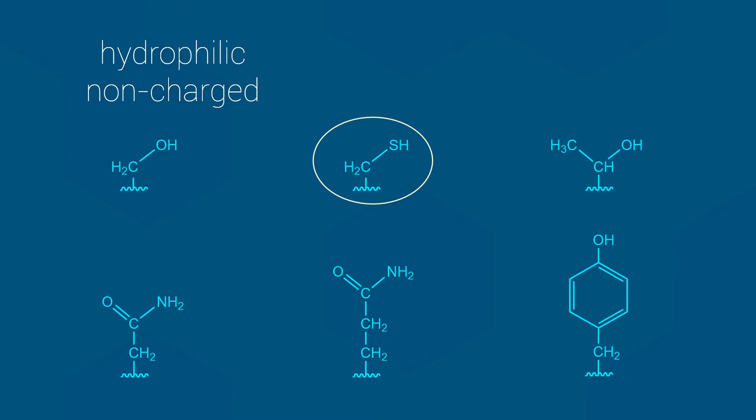First, cysteine's thiol group, the sulfur and the hydrogen, are only weakly polar. Therefore, this side chain only makes weak permanent dipole interactions, including hydrogen bonds.